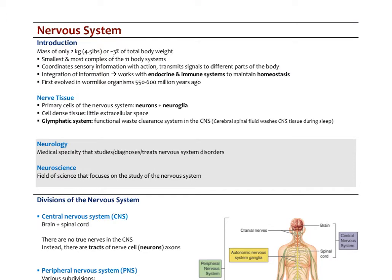The nervous system is actually the smallest and most complex of the 11 body systems that maintain homeostasis from the biomedical perspective. It has a total mass of only about four and a half pounds — just about three percent of total body weight — but it's one of the most complex body systems. The nervous system takes in information, coordinates it, and relays that to smooth muscle or somatic muscle to relate different activities, so it has an integrative, correlative function.